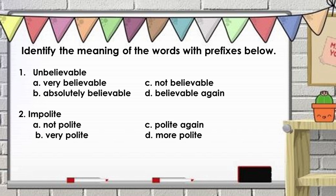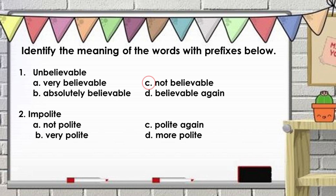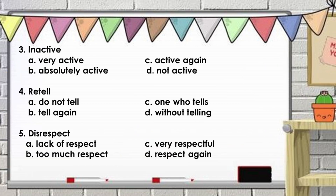Let us answer the following activities. Identify the meaning of the words with prefixes below. Number one, unbelievable — the correct answer is letter C, not believable. Number two, impolite — the correct answer is letter A, not polite. Number three, inactive — the correct answer is letter D, not active. Number four, retell — the correct answer is letter B, tell again. And number five, disrespect — the correct answer is letter A, lack of respect.